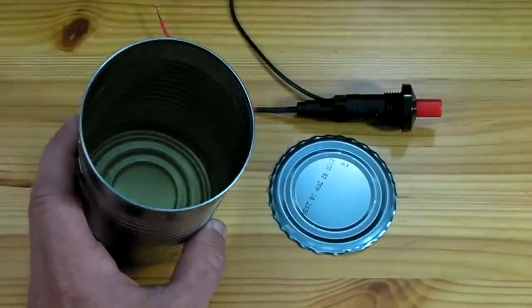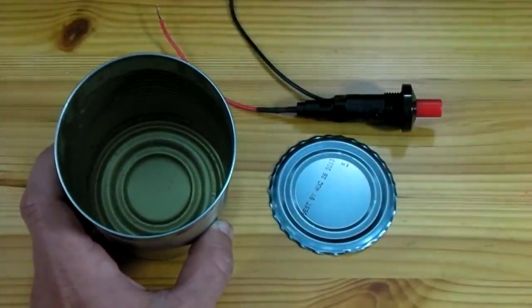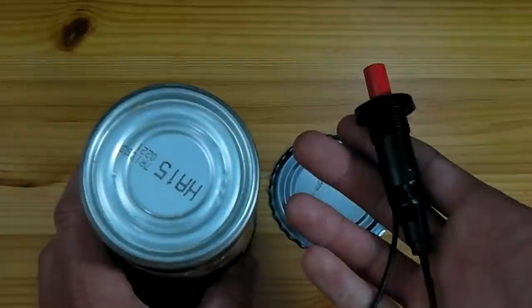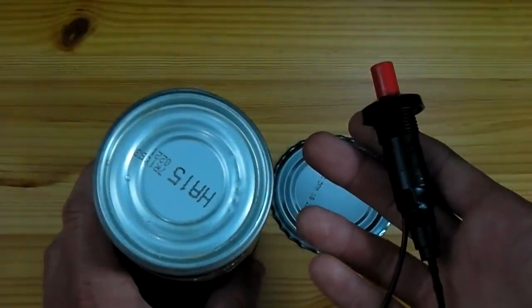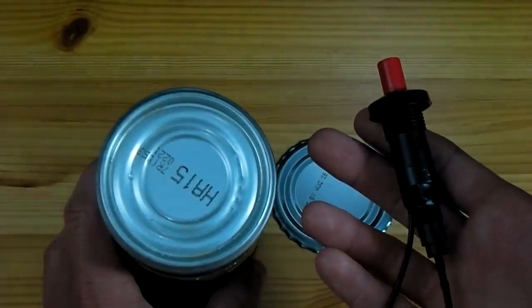The next step is to find a soup can and lid that is about the size you want the mine to be. A hole is then drilled in the bottom of the soup can which the igniter will be able to fit into.